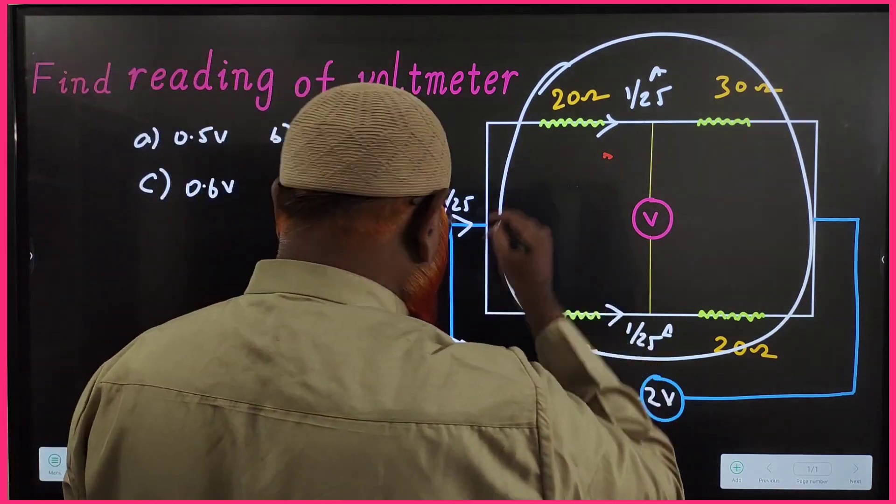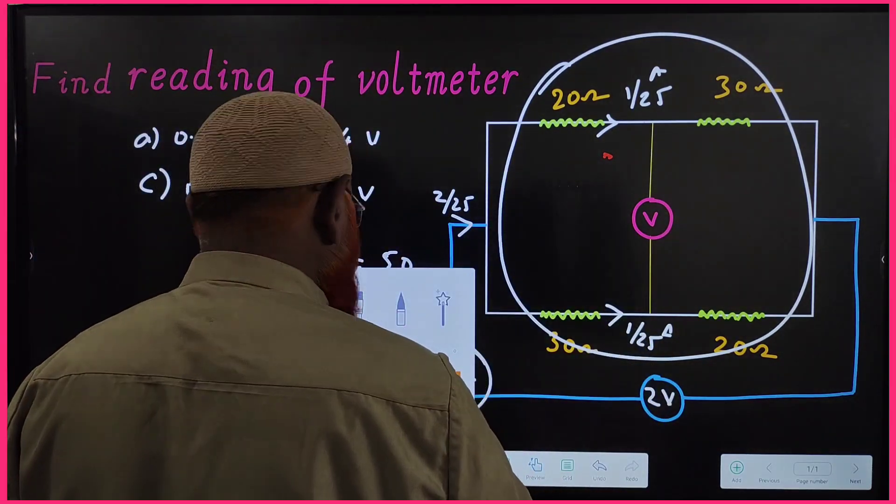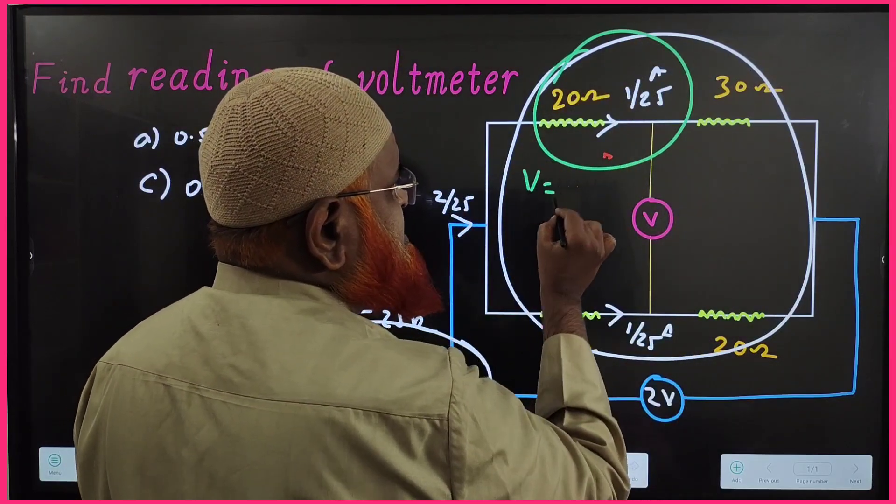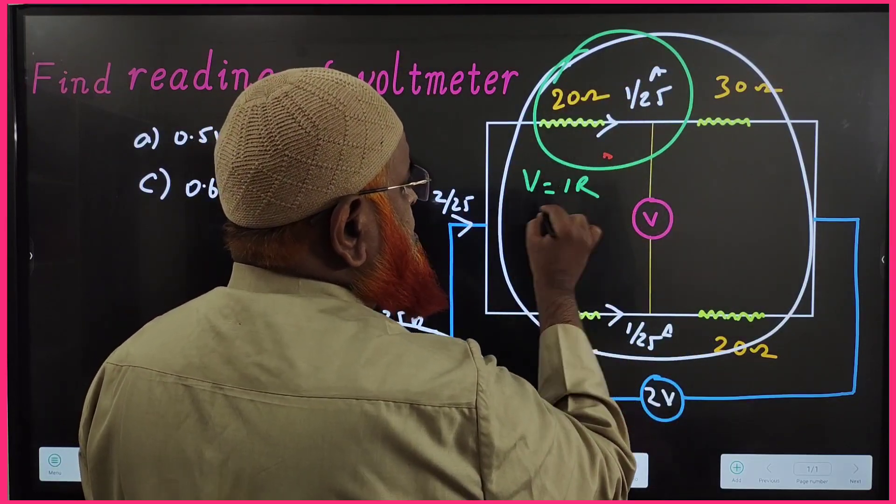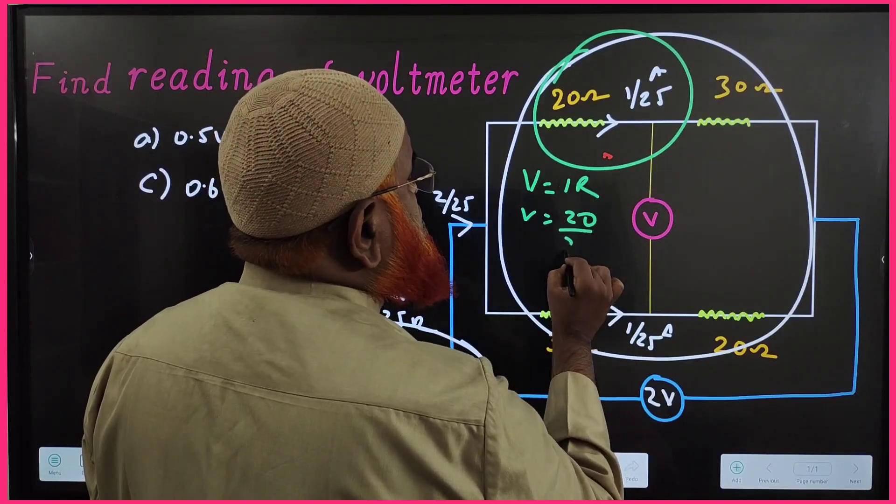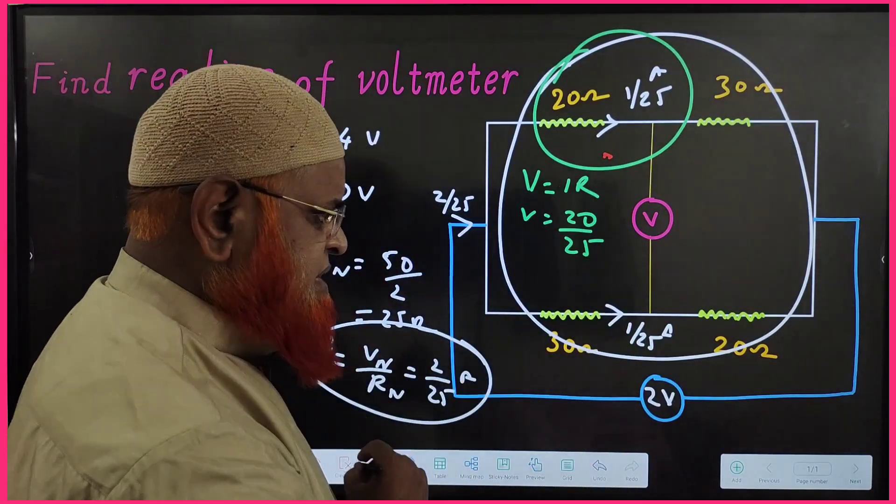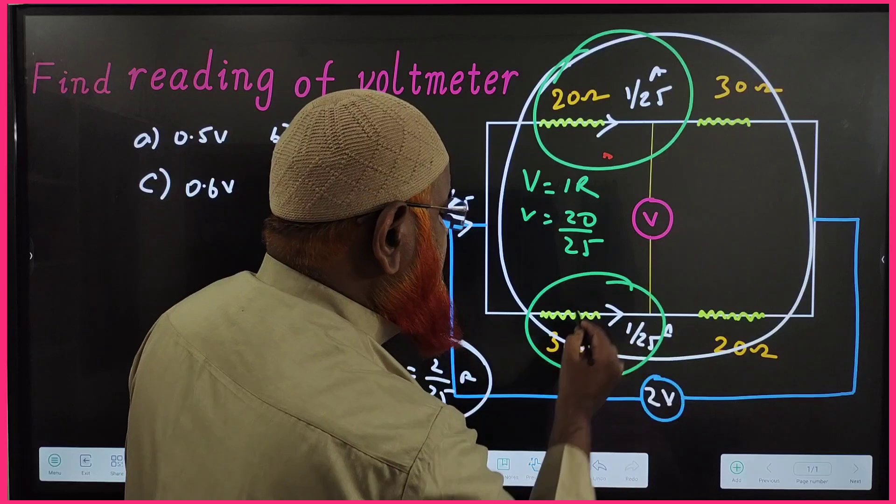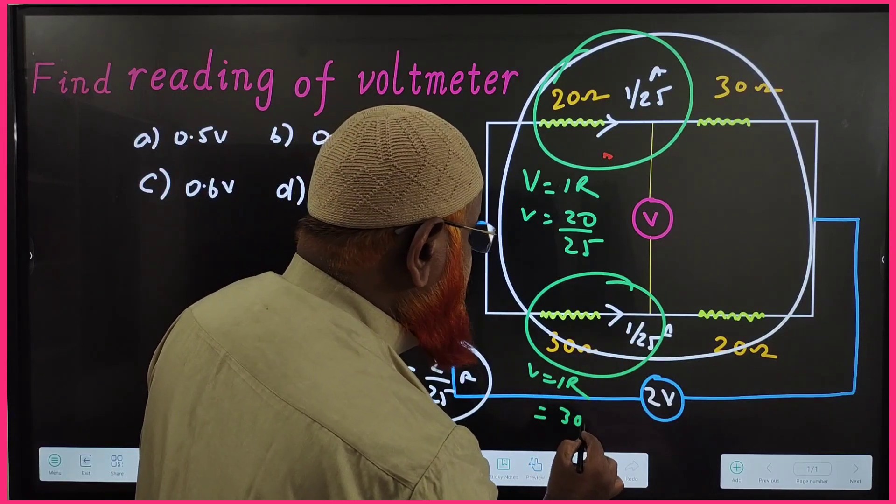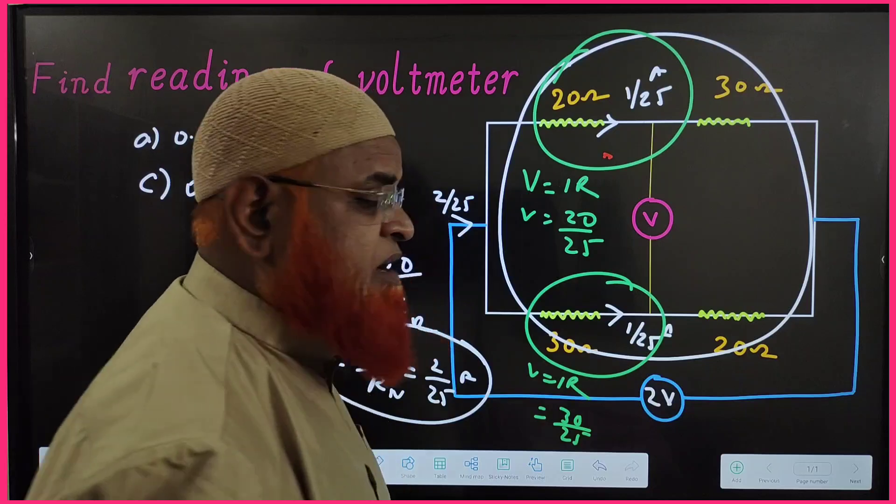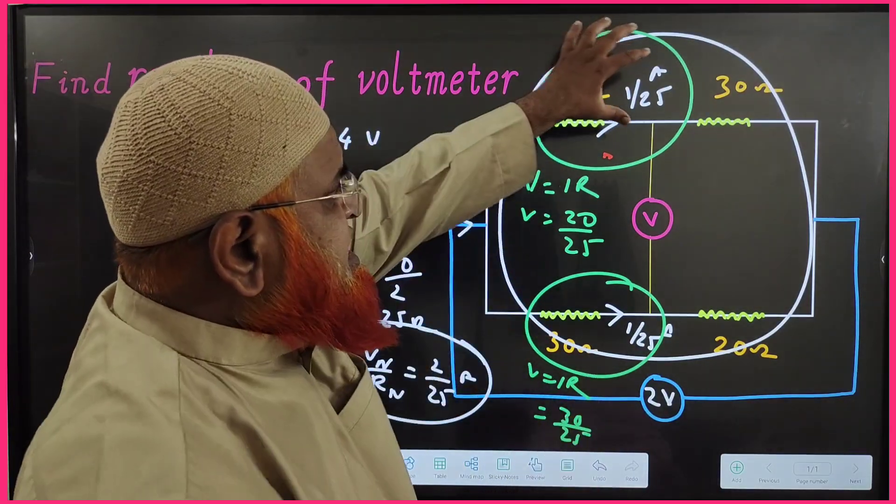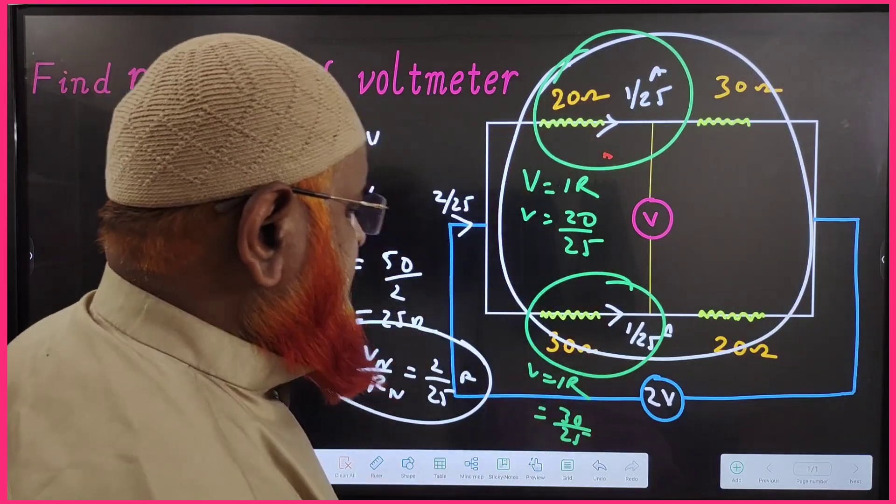Then you need to find out what is the potential at this place. Potential at this place is nothing but V equals IR. I is 1 by 25 into 20, so 20 by 25. And how much is the potential here? Here also V equals IR, which is 30 into 1 by 25, which is 30 by 25. Here potential is 30 by 25, here it is 20 by 25.